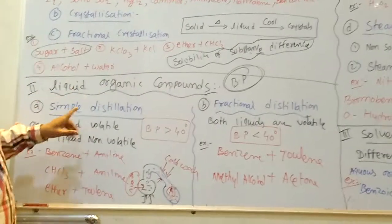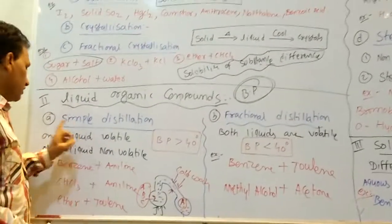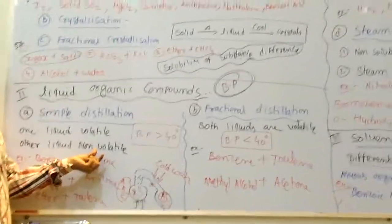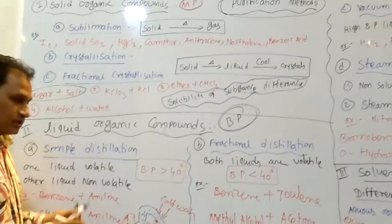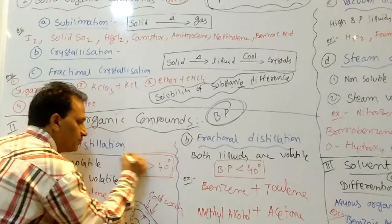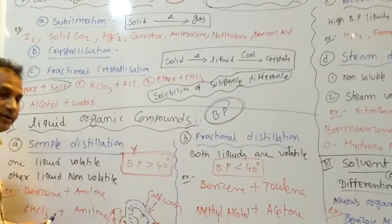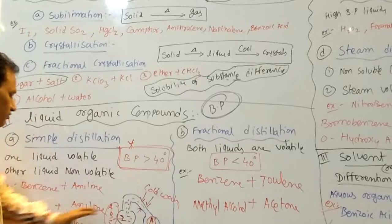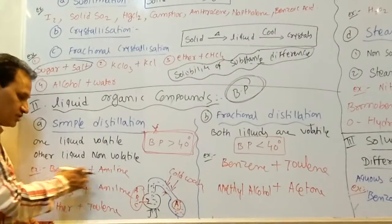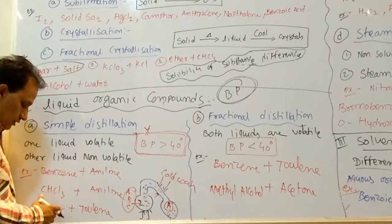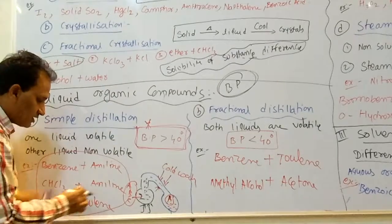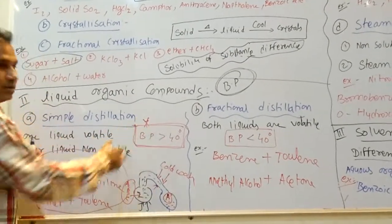Simple distillation is applicable when one liquid is volatile and another is non-volatile. The boiling point difference between the two liquids must be greater than 40 degrees — this is very important. If the boiling point difference is greater than 40 degrees, we purify by simple distillation. Examples: benzene and aniline, chloroform and aniline, and ether and toluene are purified by simple distillation.